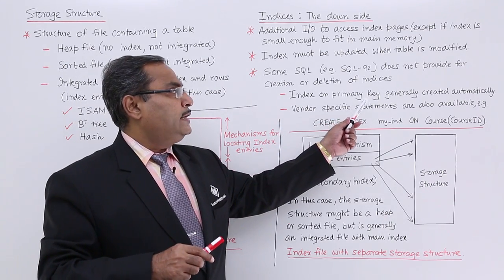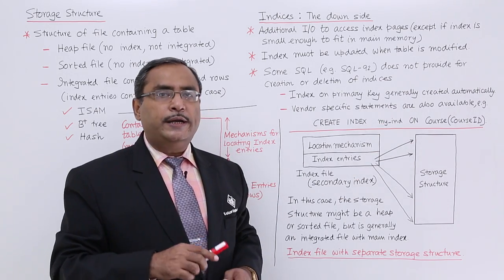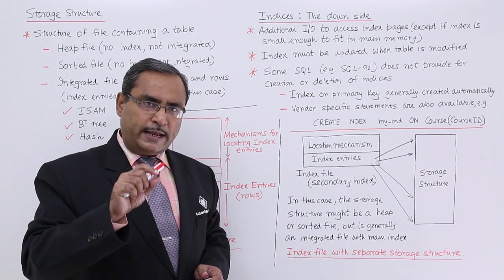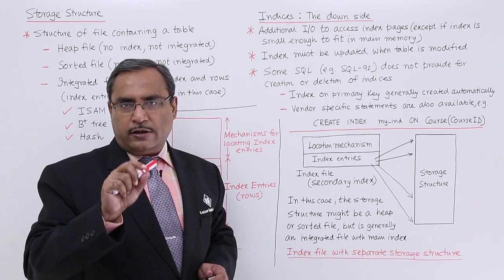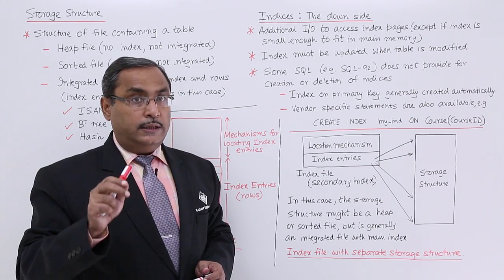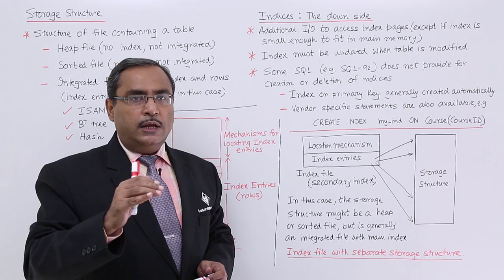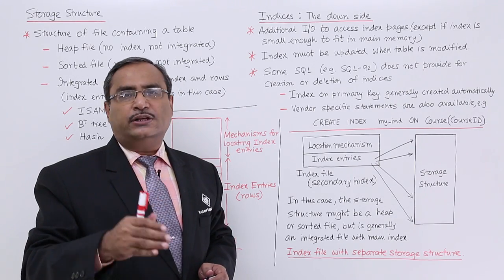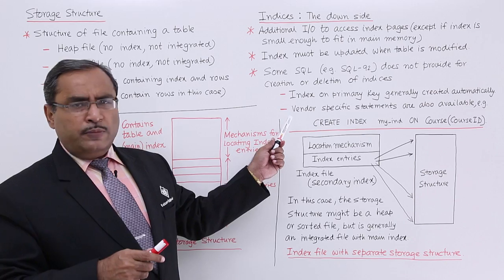Index on primary key is generally created automatically by the database software. Whenever we are making or putting some attributes as the prime attribute, then against those attributes, the index will get created by the software itself automatically. Otherwise,